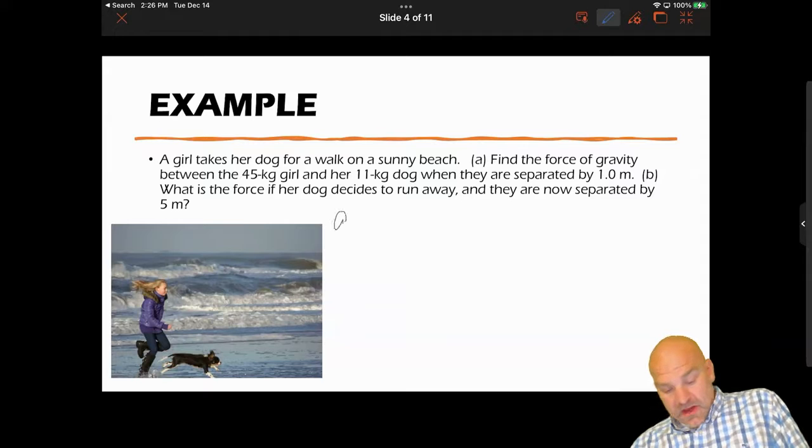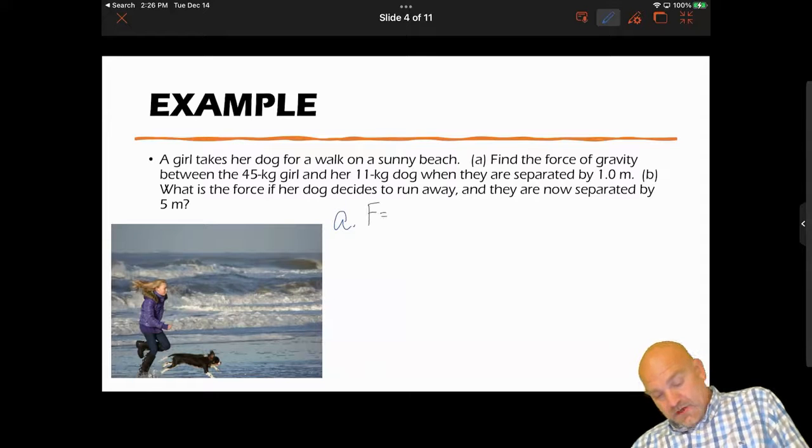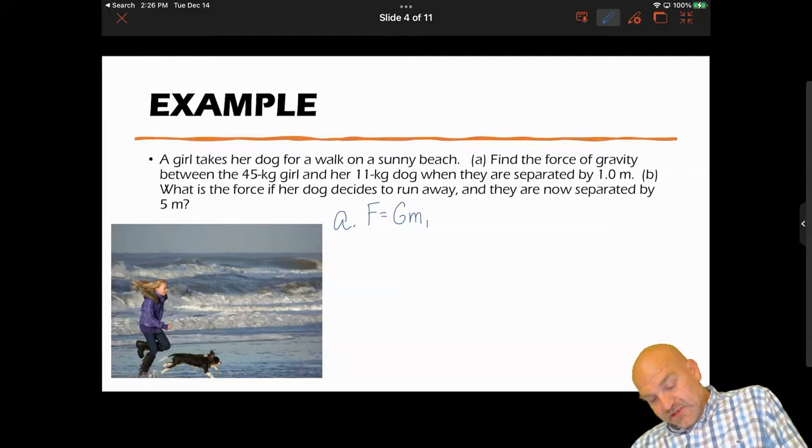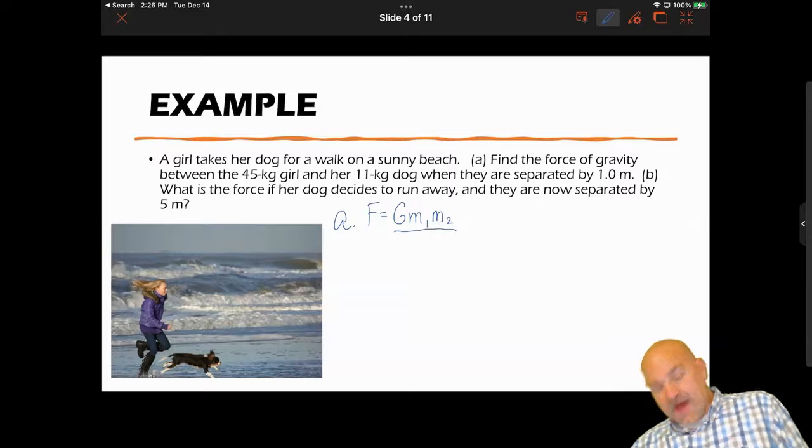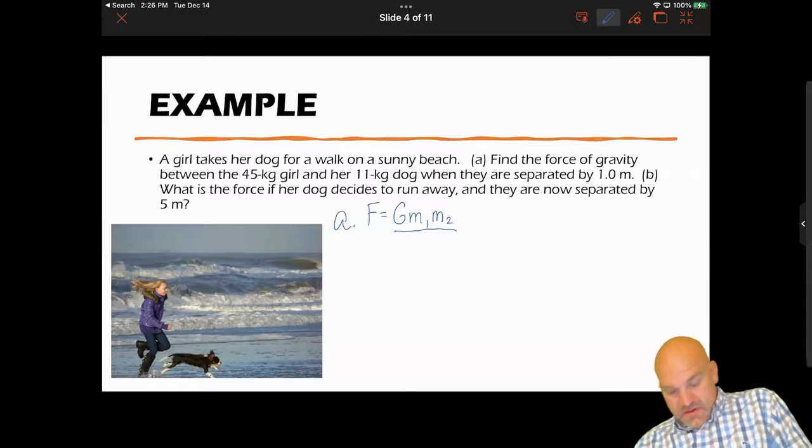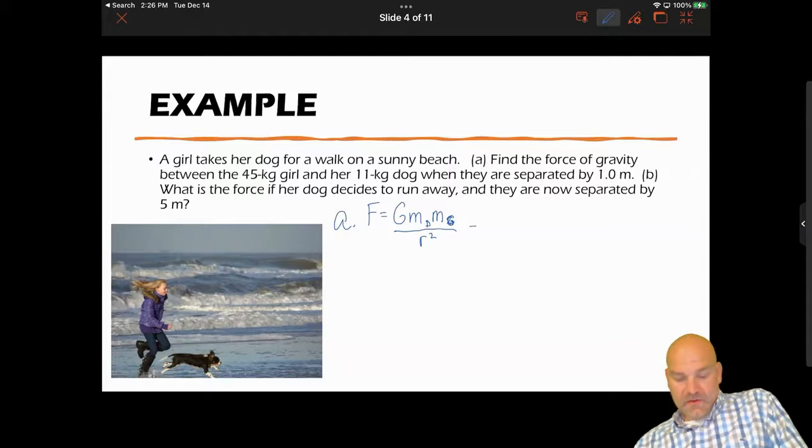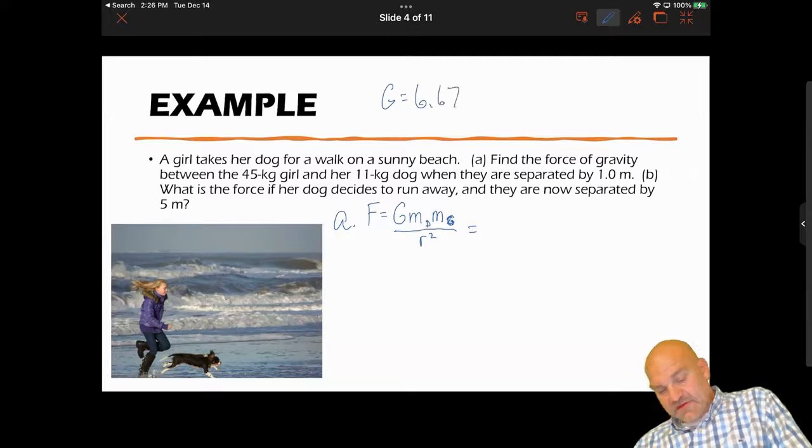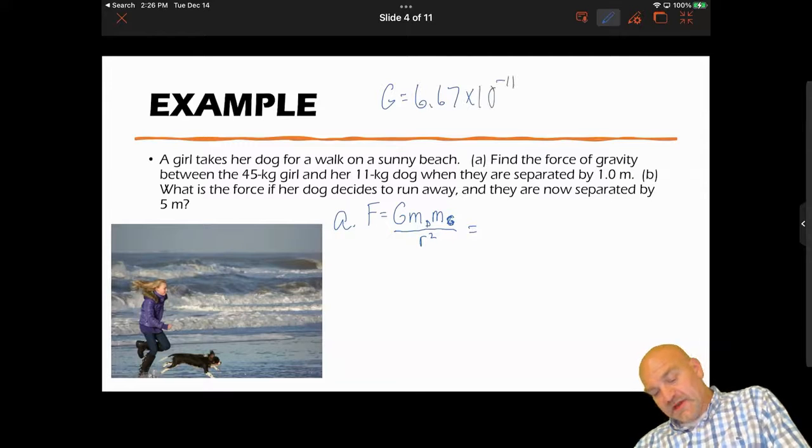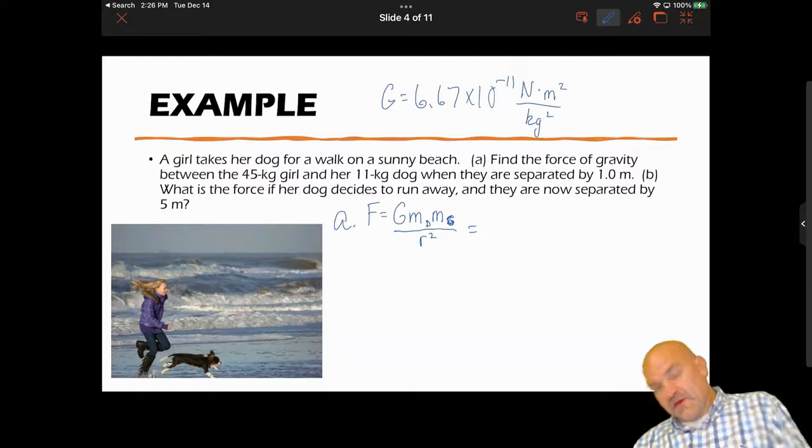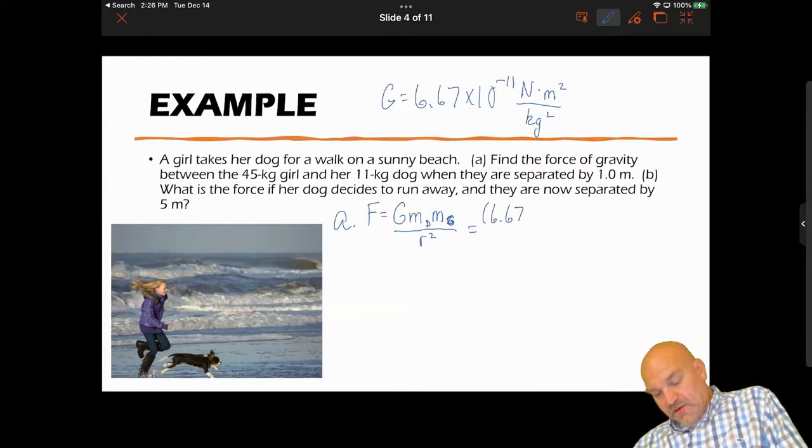So part A, we're going to use universal gravitation: G times the mass of the dog times the mass of the girl divided by the distance between them. Remember, G has a value of 6.67 times 10 to the negative 11 newtons times meters squared per kilogram squared. So I'm going to plug in my numbers now: 6.67 times 10 to the negative 11th times the dog's mass, which is 11, times her mass, which is 45.